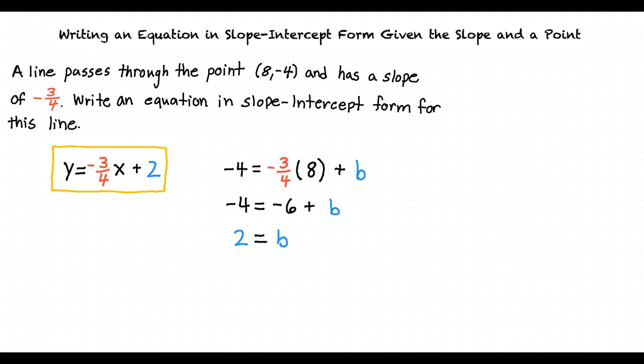I think I understand this now. Just to be sure, let me go over what I have learned. To write an equation in slope-intercept form given the slope and a point, we must first substitute the value of the slope given into the slope-intercept form equation. We then must substitute the x and y values of the coordinate point given into the slope-intercept form equation and solve for the y-intercept. Finally, we will insert the values for the slope and the y-intercept into the slope-intercept form equation to get our final answer.